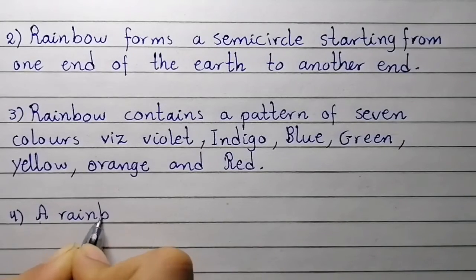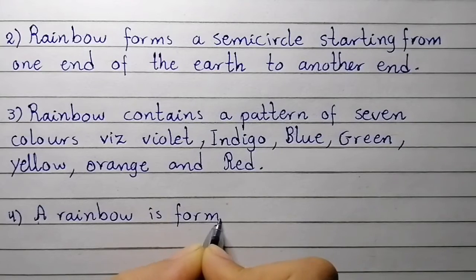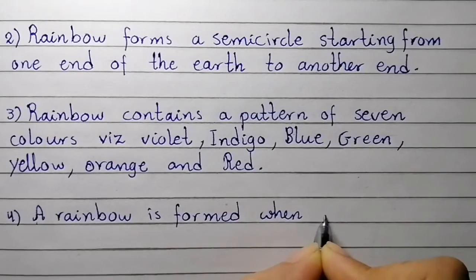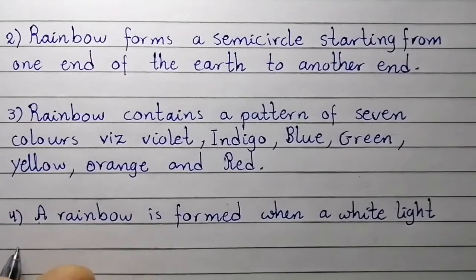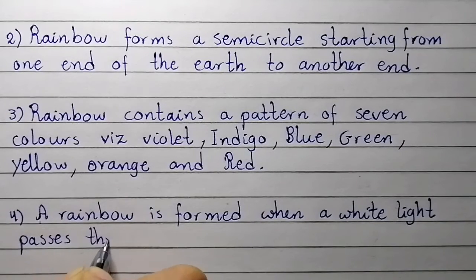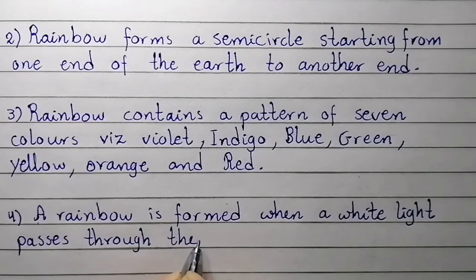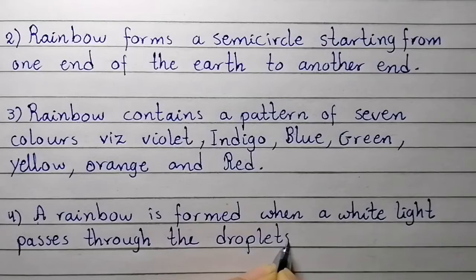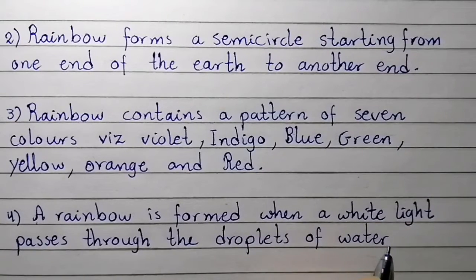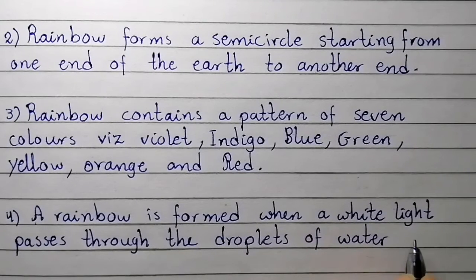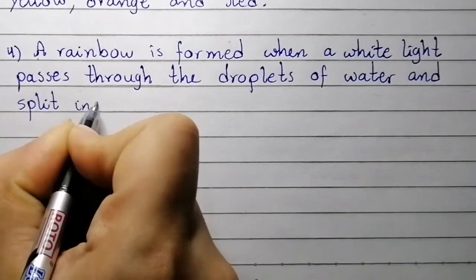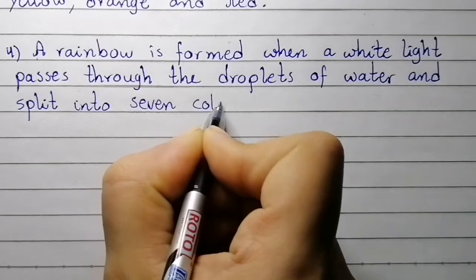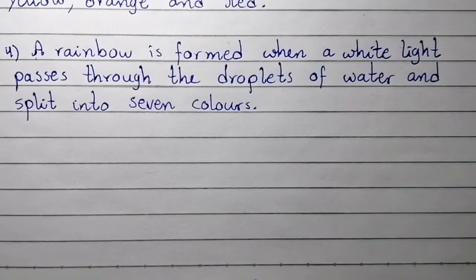Point number four: a rainbow is formed when white light passes through the droplets of water and splits into seven colors.